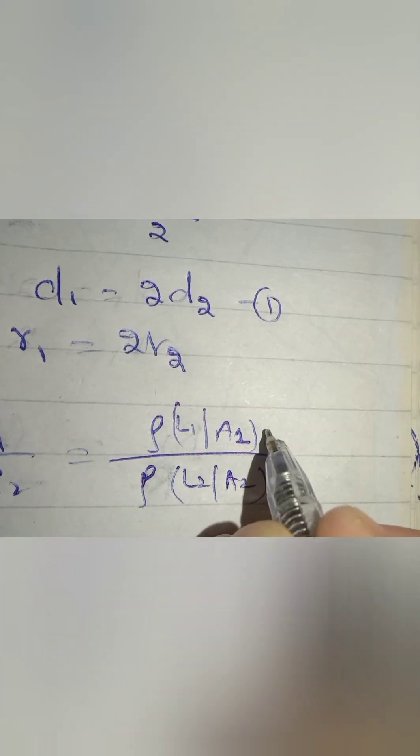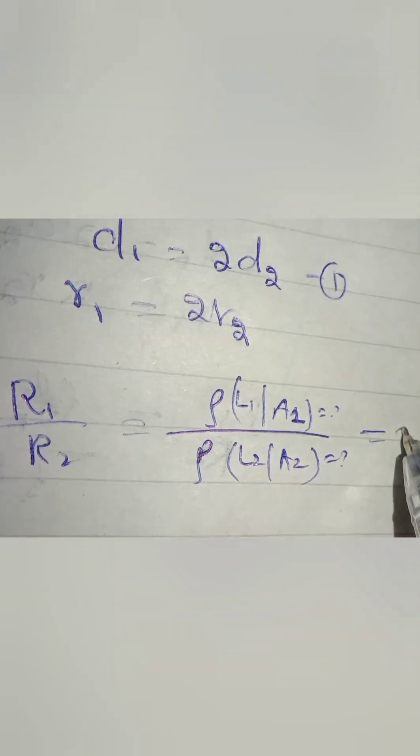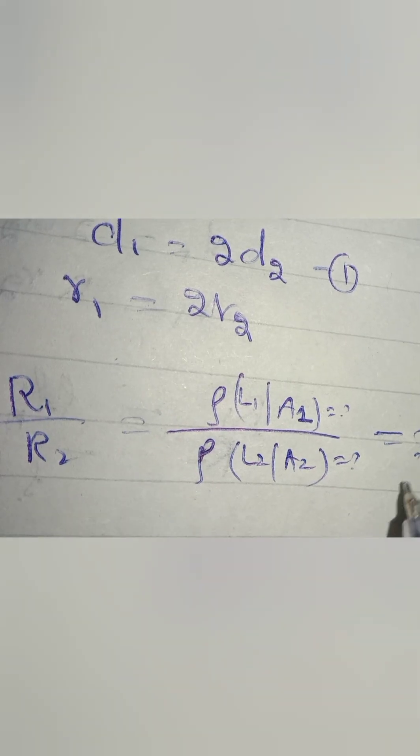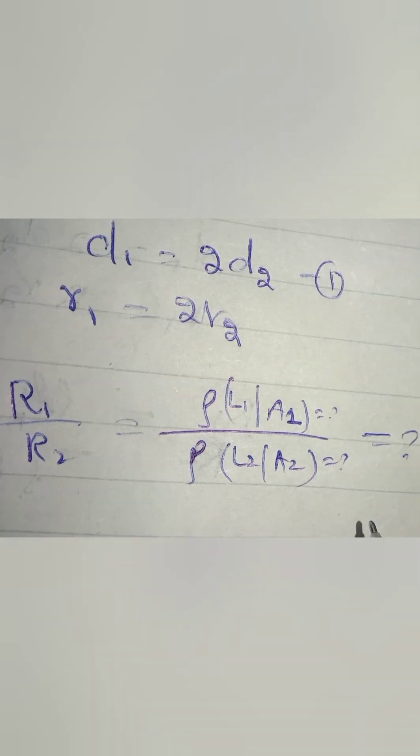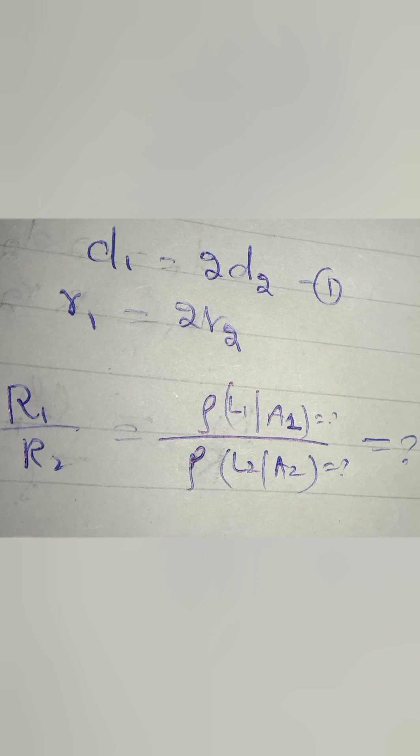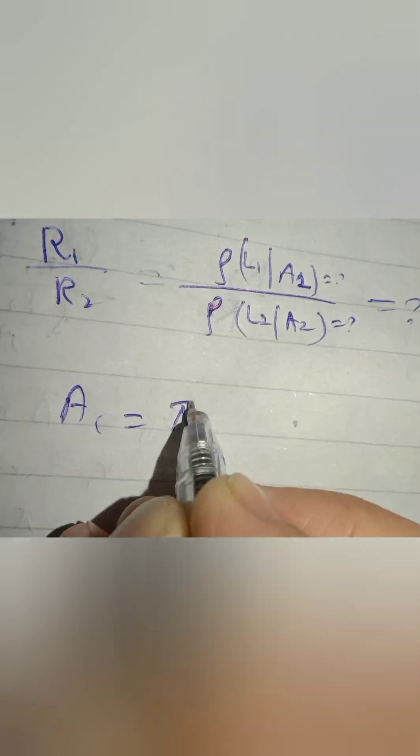Actually we have to find the ratio of r1 and r2. We know the formula R equals ρL over A. From here we can see that we need to find L1, A1, L2, and A2. Only then we can find the value of R1 and R2, and that will be our answer. I will convert all our equations in terms of r2.